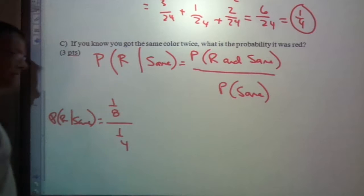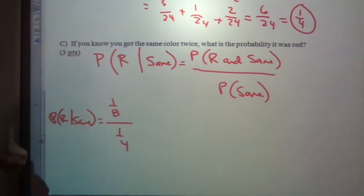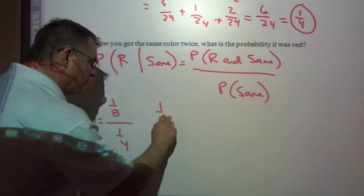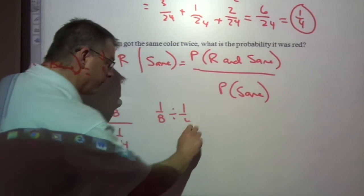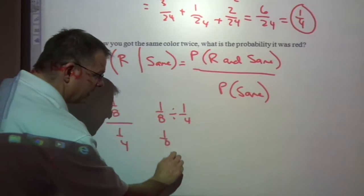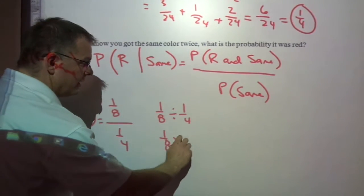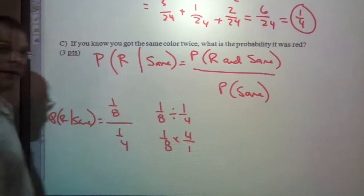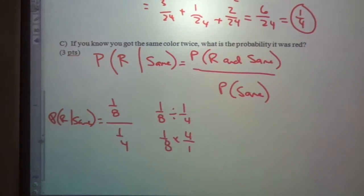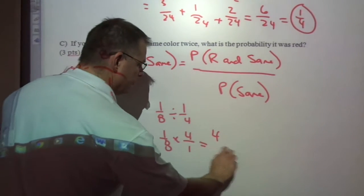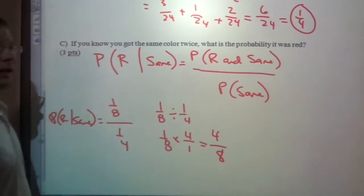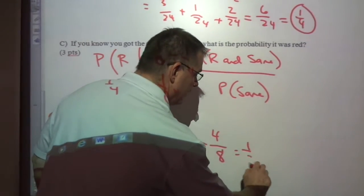So we have one-eighth divided by one-fourth. And the only issue here is now remembering how to divide fractions. When you divide, one-eighth divided by one-fourth, remember that means that we need to flip the second one and multiply by that reciprocal. So then we have tops times tops, bottoms times bottoms, four-eighths, reduces to be one-half.